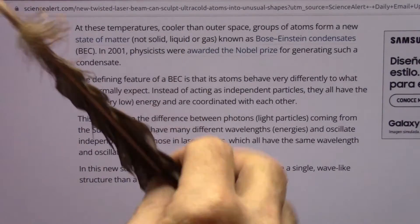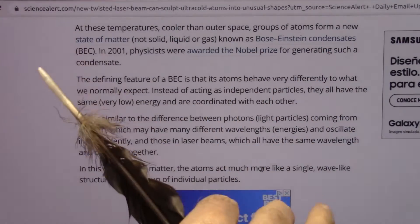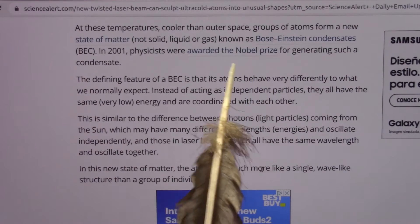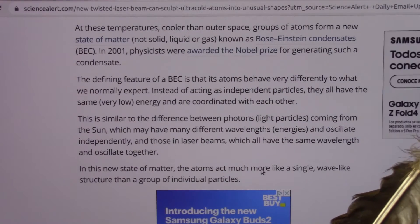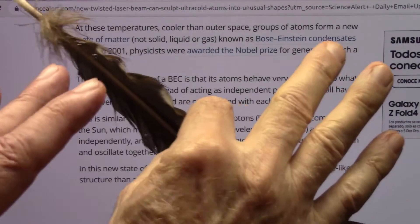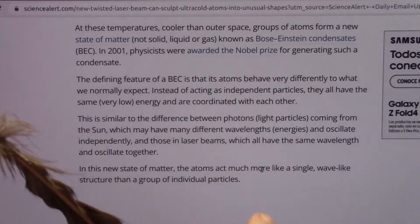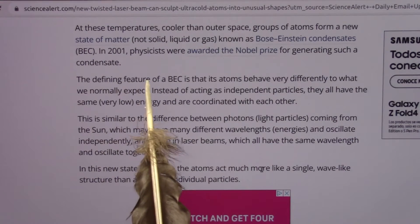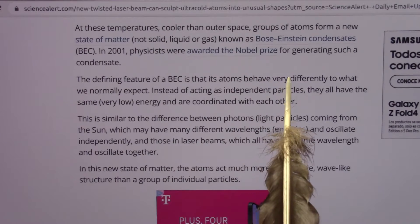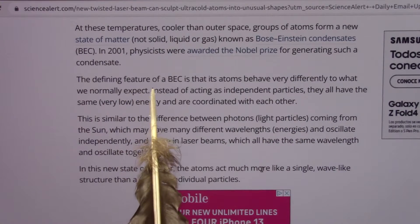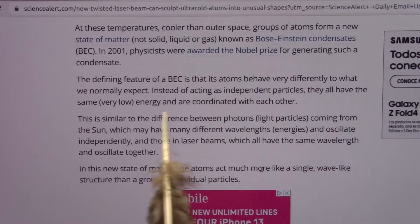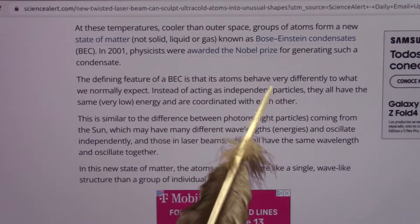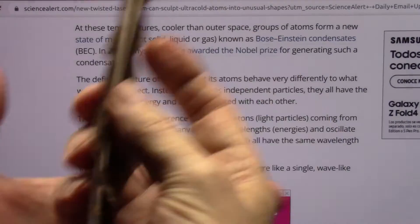At absolute zero, there is no resistance to electrons flowing in. The electron neutrinos go flying in there to find the black matter. That's why superconductivity — they say you can have as much electricity as you want generated through there. Yes, but only for an instant, because it starts to pile back against itself. That's push to shove. The defining feature of Bose-Einstein condensate is the atoms behave very differently — instead of acting as independent particles, they all have the same very low energy and are coordinated with each other. They just glob into a ball.